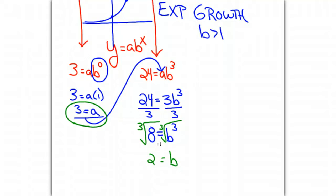Now we have a as 3, b as 2. We know our equation will be y equals 3 times 2 to the x, an exponential growth function.